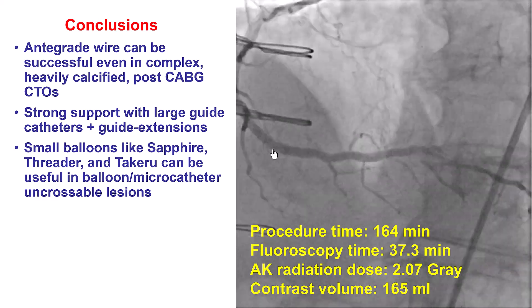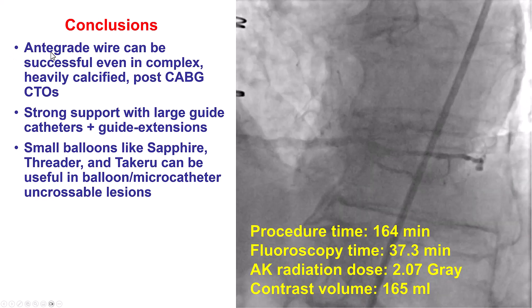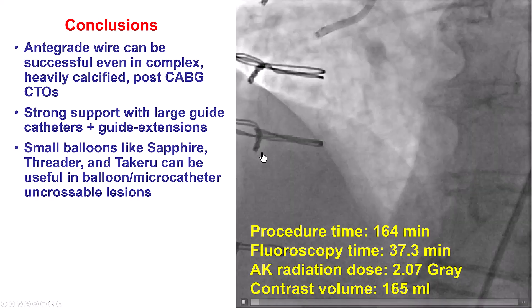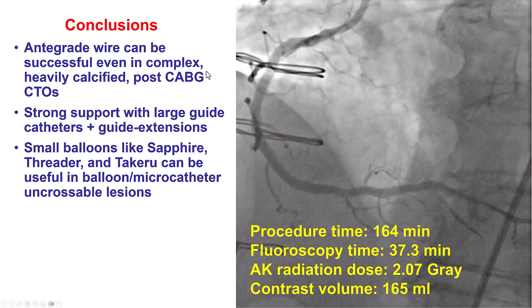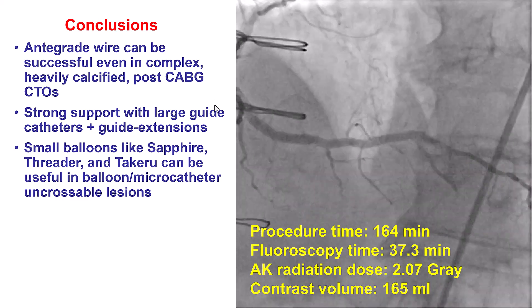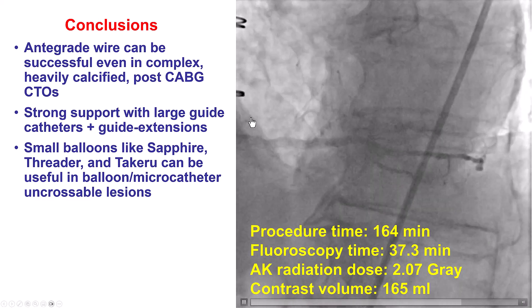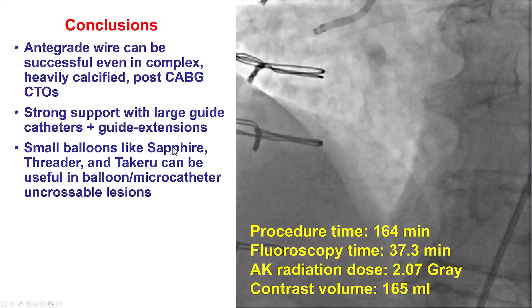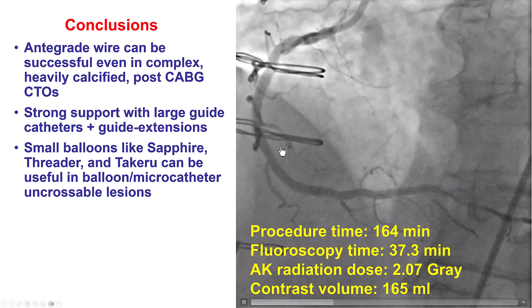In summary, this case provided some interesting lessons. The first is that antegrade wiring can be successful even in highly complex cases with severe calcification, previous bypass, and three prior failed attempts. The second is the importance of strong support — both for wiring and for delivering microcatheters and balloons through the lesion. We had a microcatheter uncrossable proximal cap and followed the balloon uncrossable algorithm using a small balloon, which was successful in crossing, predilating, and then delivering the microcatheter, with a nice final result.